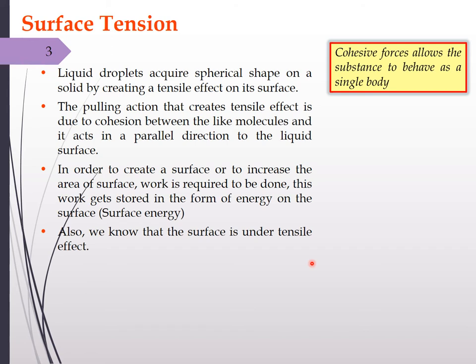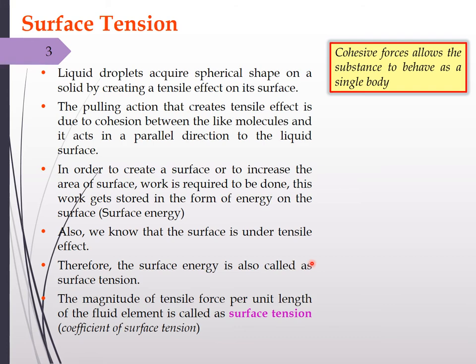Cohesive forces allow a substance to behave as a single body. In order to create a surface — whether a liquid bubble, liquid droplet, or any new surface — surface tension effects will be present. To create or increase the area of an existing surface, some work is required. That work gets stored as energy on the surface, which we call surface energy. Since that surface is under tensile effect, this energy is also called surface tension.